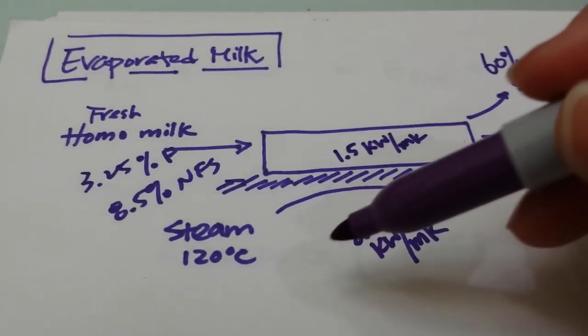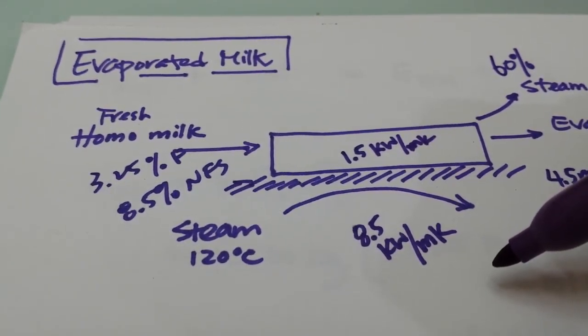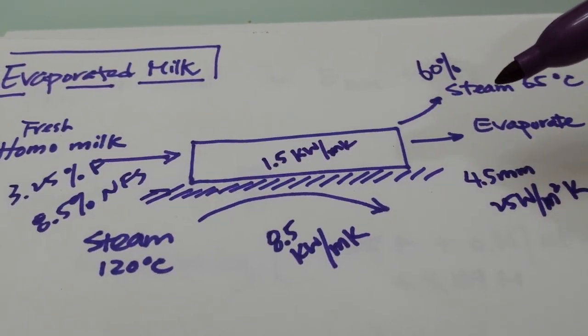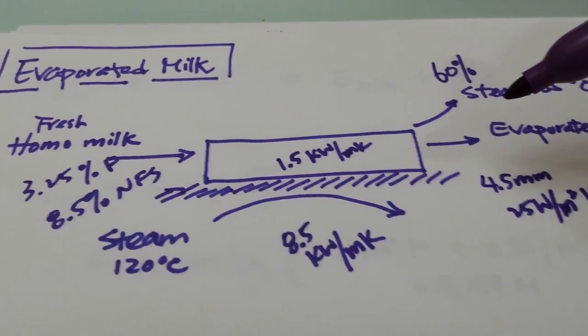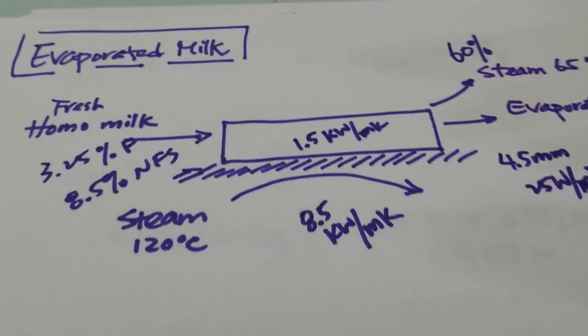So the question is two things. How much steam do we need to supply to give enough energy for the evaporation of the water from the milk, and how long is the pipe that we need?